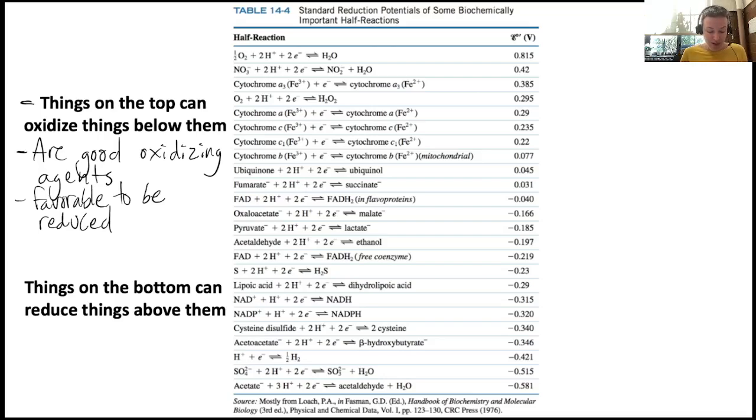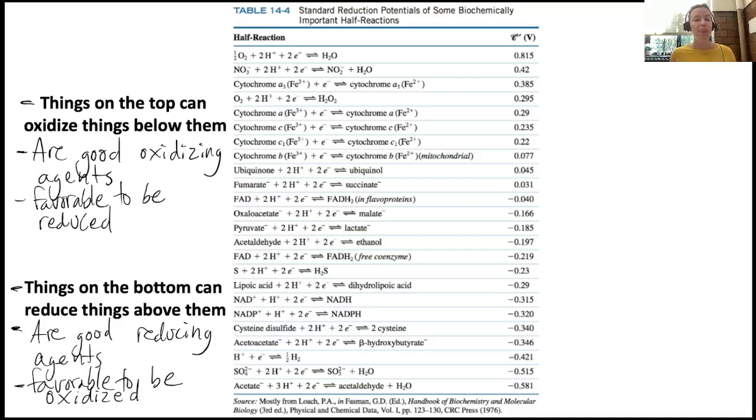Things on the bottom can reduce things above them, which means they are good reducing agents. Which means that they themselves are favorable to be oxidized. As long as we keep that in mind, we will understand when redox is favorable. And we'll get some practice for this together.